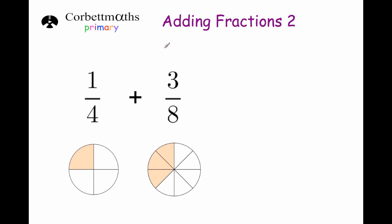Hi and welcome to this Corporate Maths Primary video on adding fractions. In this video we're going to look at how to add fractions with different denominators, an example being a quarter plus three eighths. A quarter has got a denominator of four whereas three eighths has got a denominator of eight, so they're not as easy to add together. If it was a third plus a third you could instantly know the answer would be two thirds, but with a quarter plus three eighths it's harder to visualize because they have different denominators.